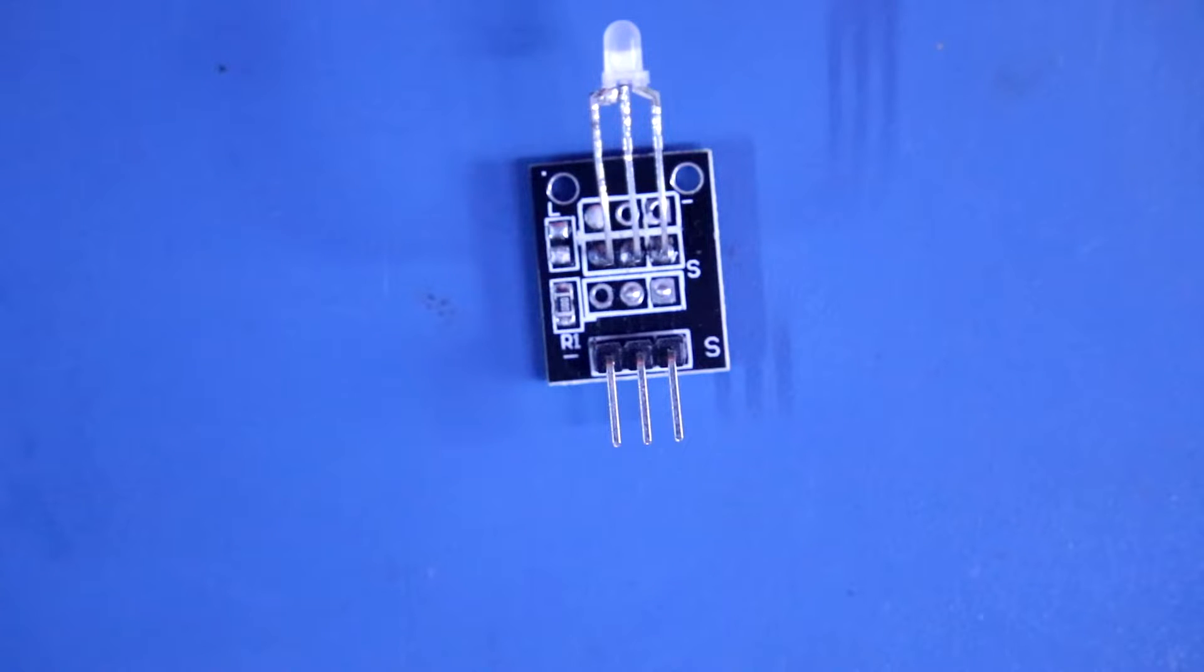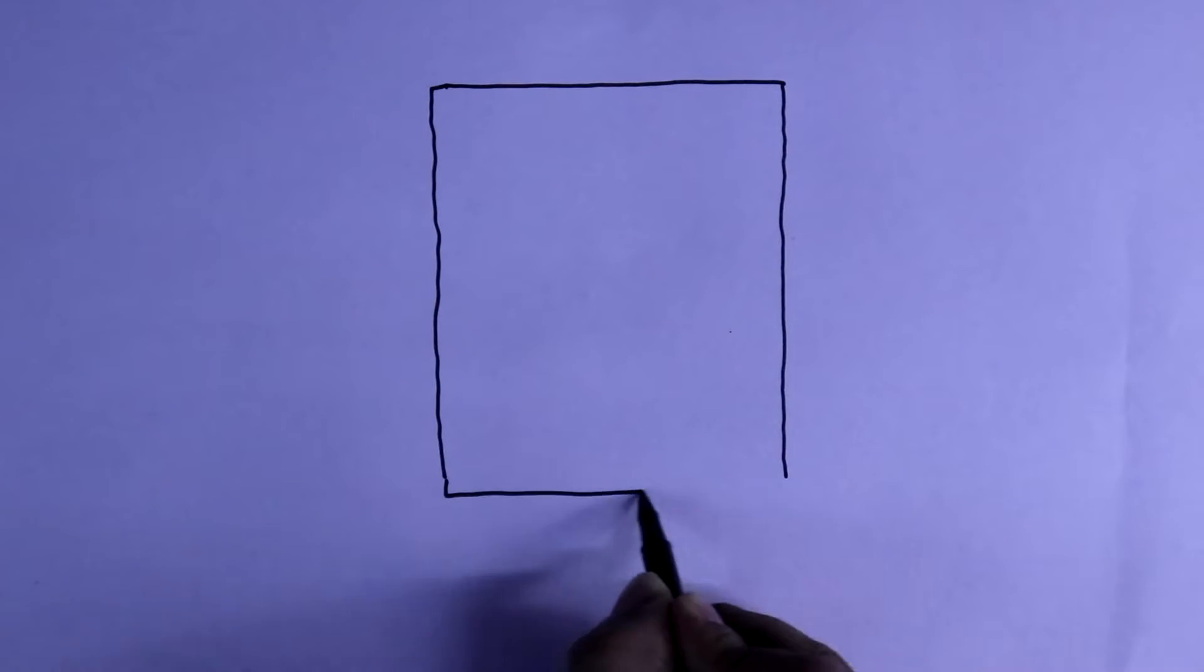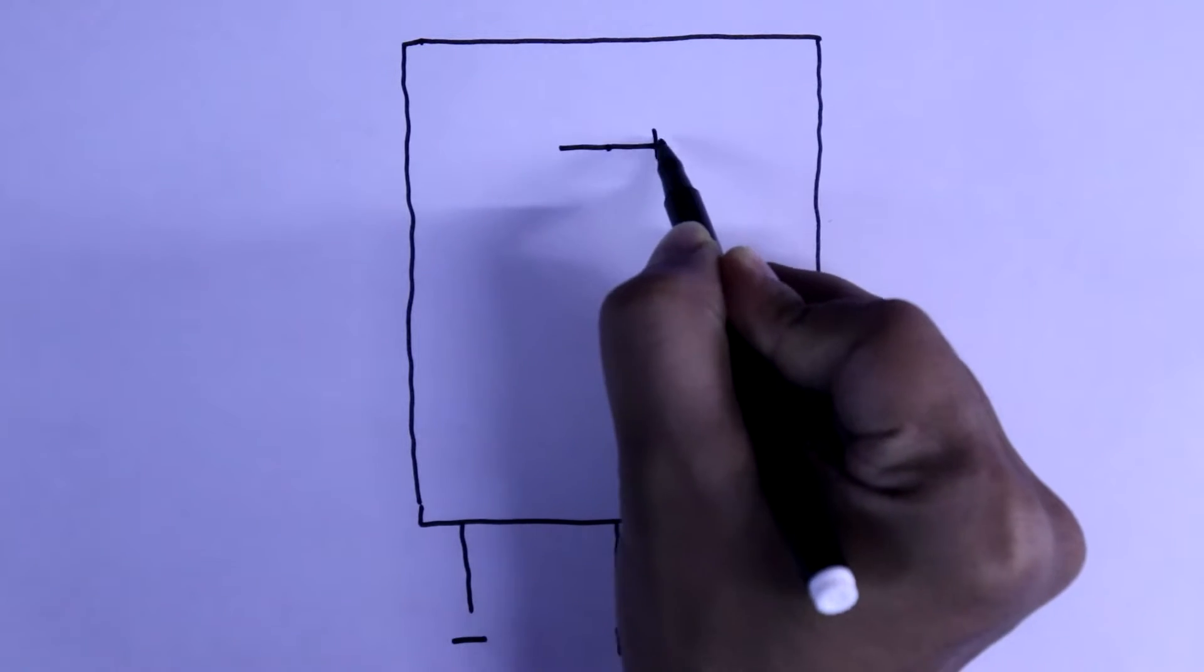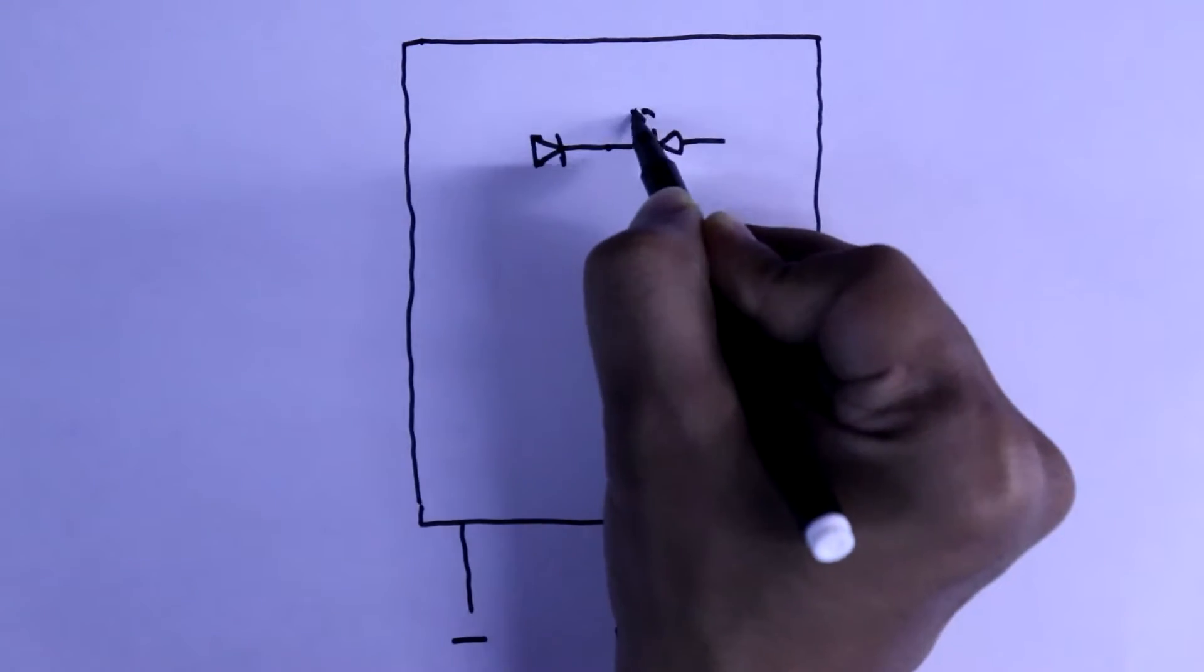Now let's see the module connection. This is the module and it has three pins: green pin, the middle one is red pin and it is ground pin or negative. Inside this LED, we have two LEDs, green and red.